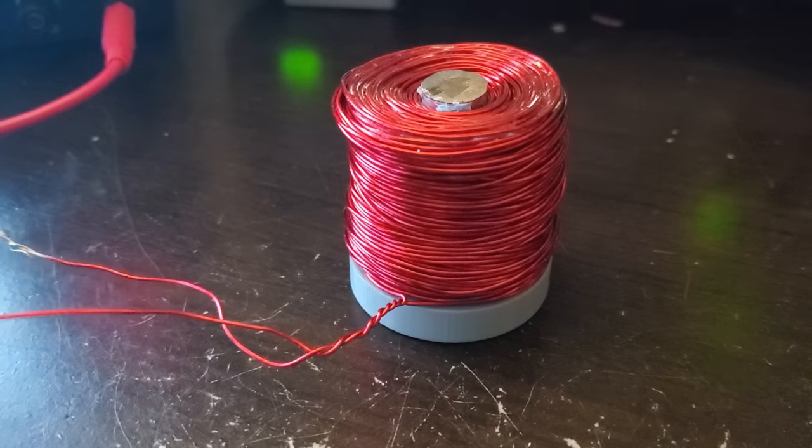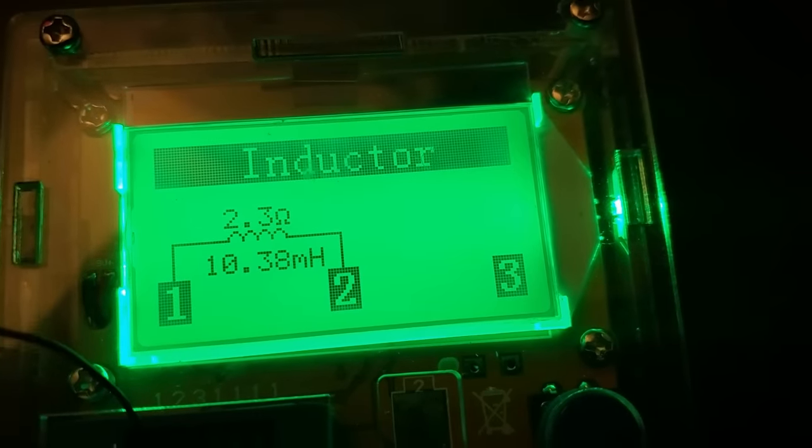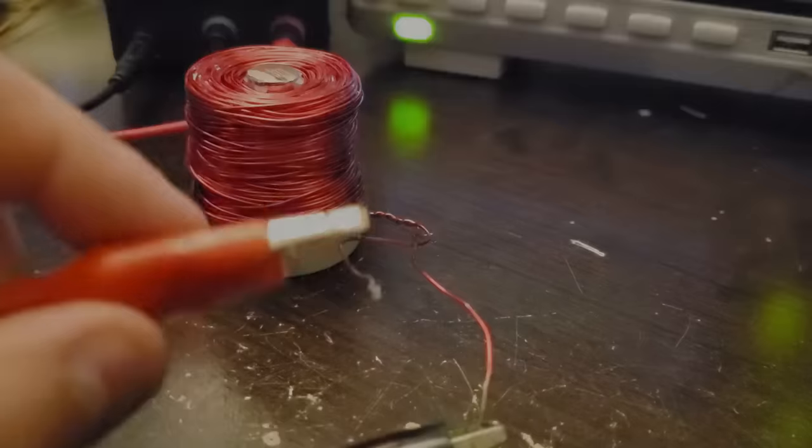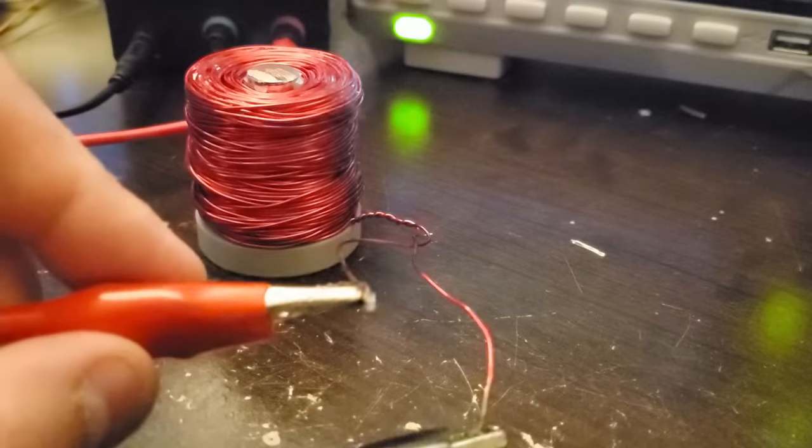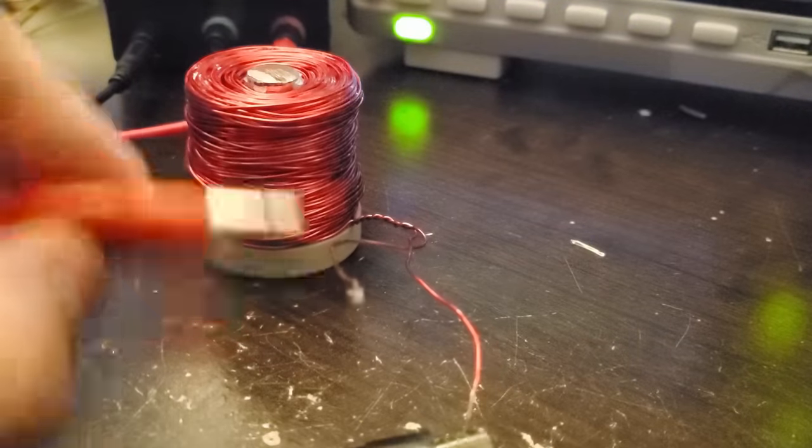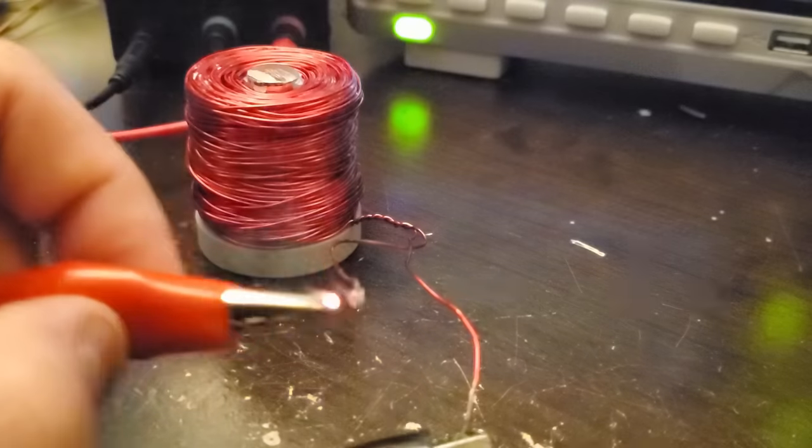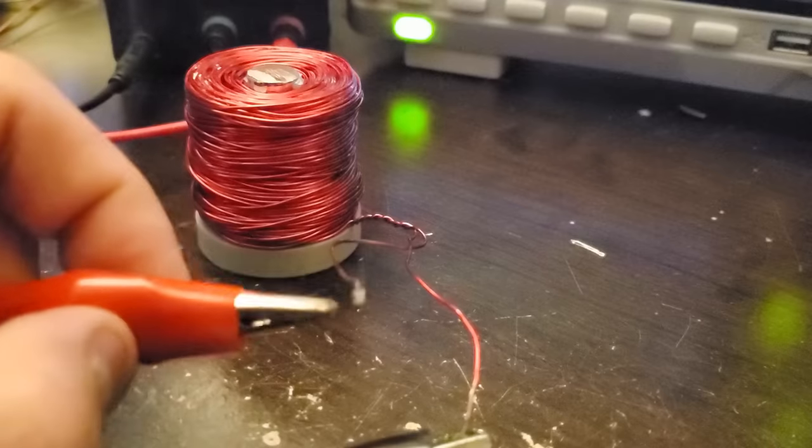Now suppose I put the same 10 amps through this coil. My meter says it has a little over 10 millihenries, so let's see the difference in the spark. Giving the coil 10 amps and suddenly breaking contact creates a big bright blue spark, big enough to hurt my eyes a little bit. There's less than 20 volts going into the coil, but when I break contact, the arc is thousands of volts.